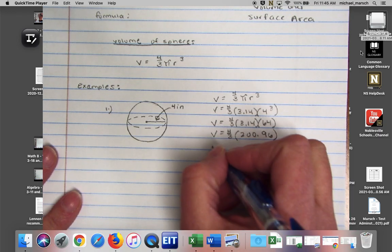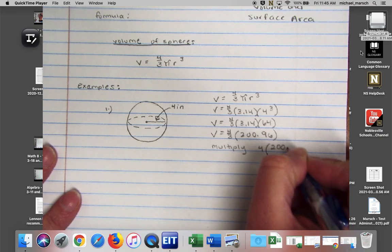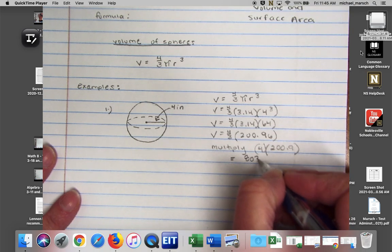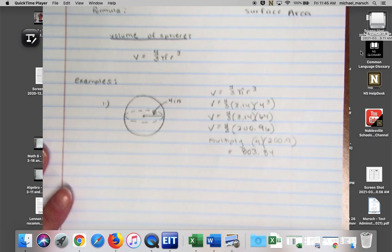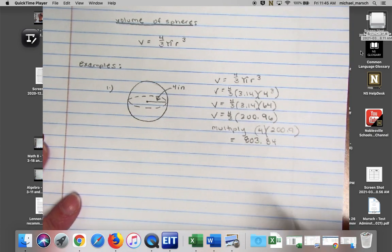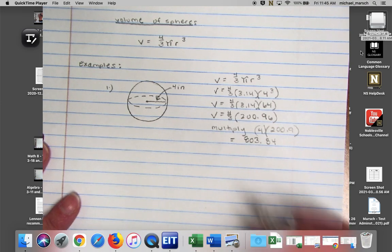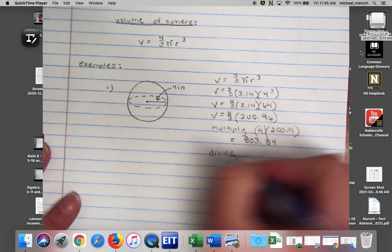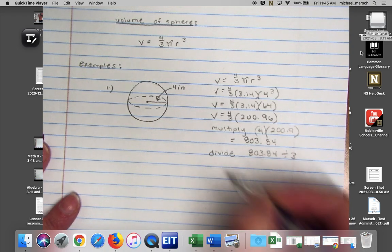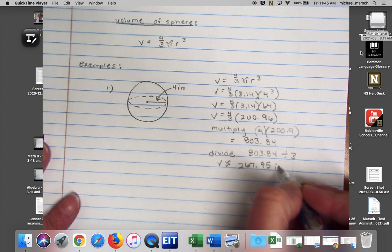So here's where it gets a little bit weird. Our next step is to multiply 4 times 200.96, and you're going to get 803.84. But we still have that third there. So what would we do if we had a third of something? Divide by 3. So our last step is to divide 803.84 divided by 3. So volume will be about 267.95 inches cubed.